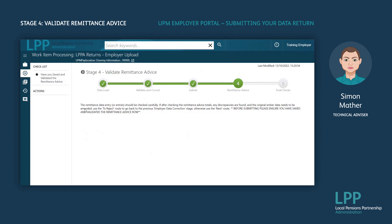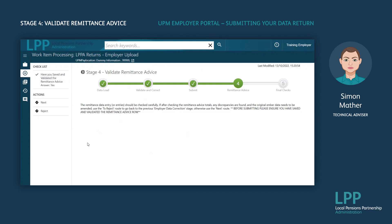The checklist in the actions column on the left will ask you: have you saved and validated the remittance advice? Click on this question, choose Yes, then click Submit. Then in the actions column click Next to take you to Stage 5.